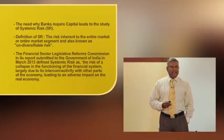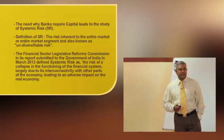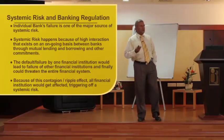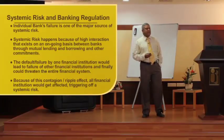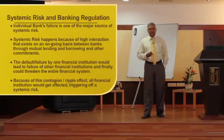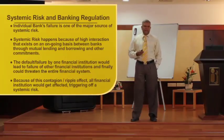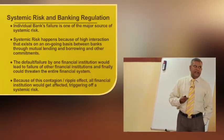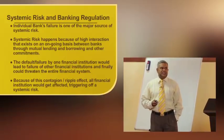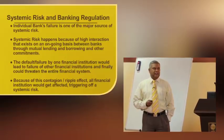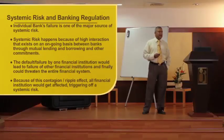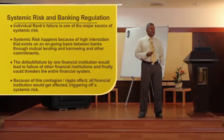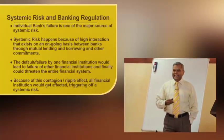Even a portfolio of well-diversified assets cannot escape systemic risk. How is systemic risk connected to banking regulation? Individual bank failure is one of the major sources of systemic risk because people's deposits are kept with the bank. If the bank fails, they will not be able to deliver funds to the people in times of need. Systemic risk happens because of high interaction between banks through mutual lending, borrowing, and other commitments. The default or failure by one financial institution would lead to failure of another financial institution.